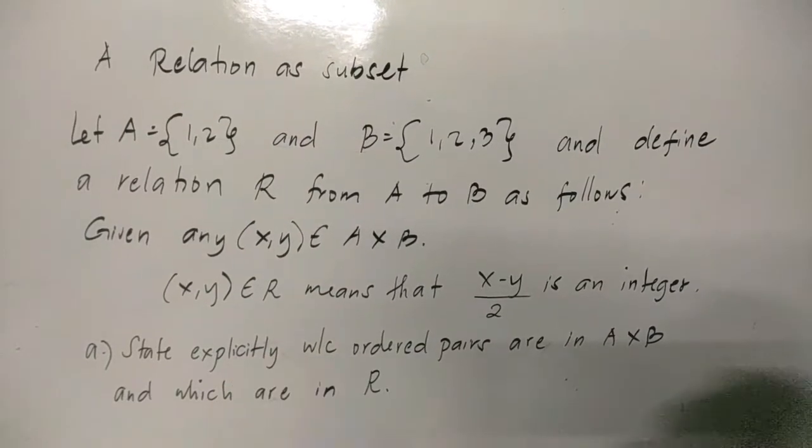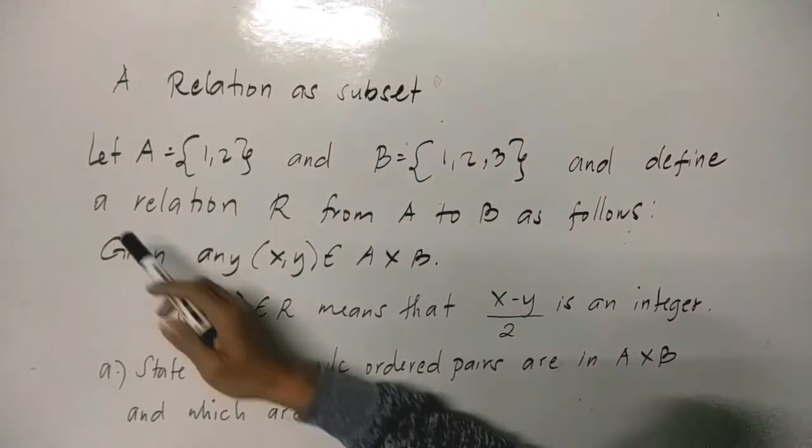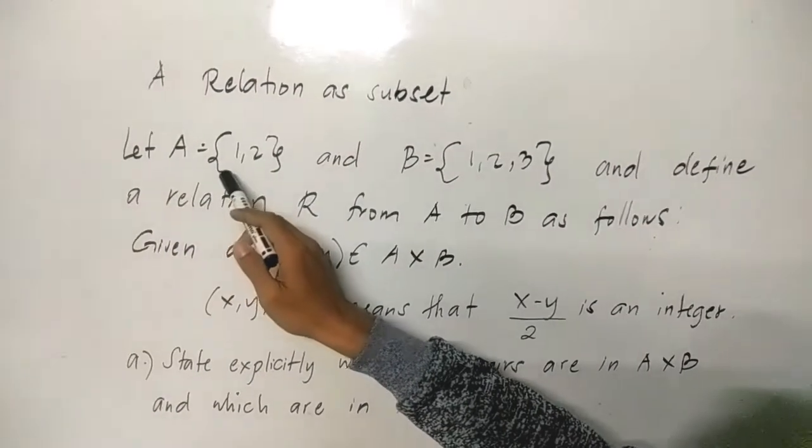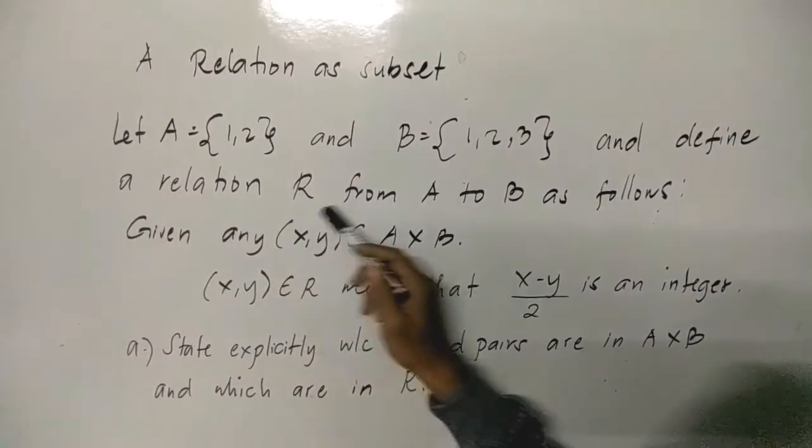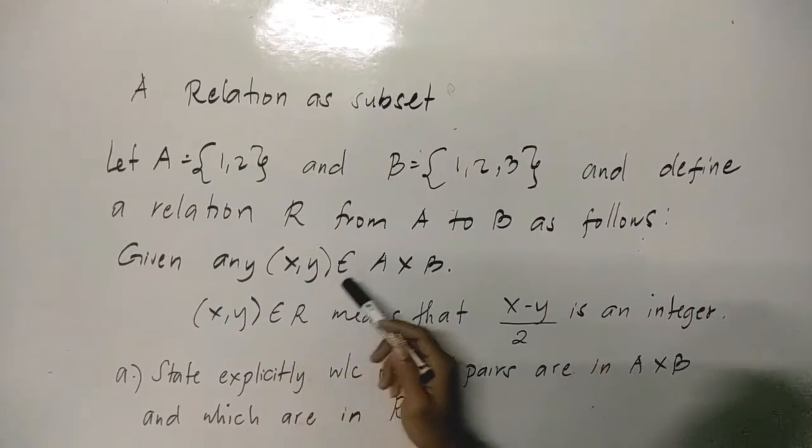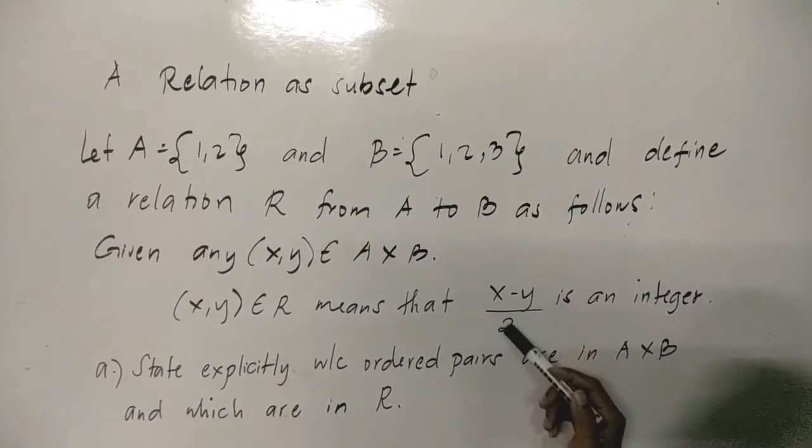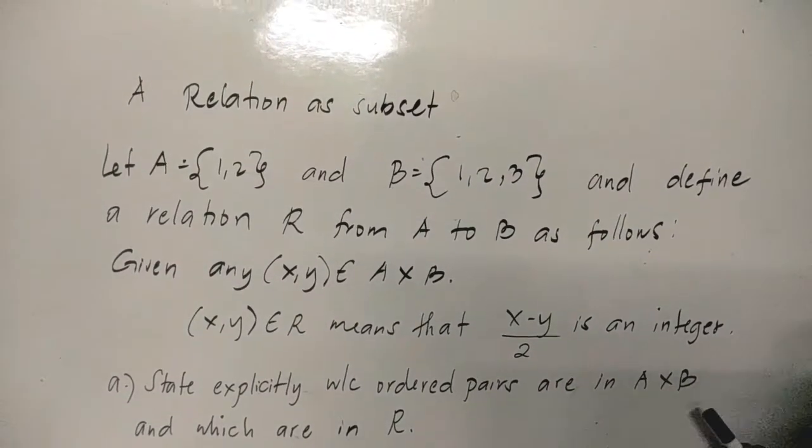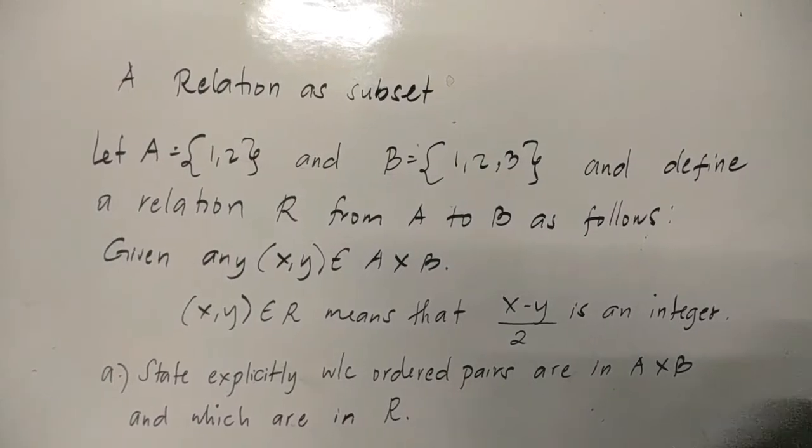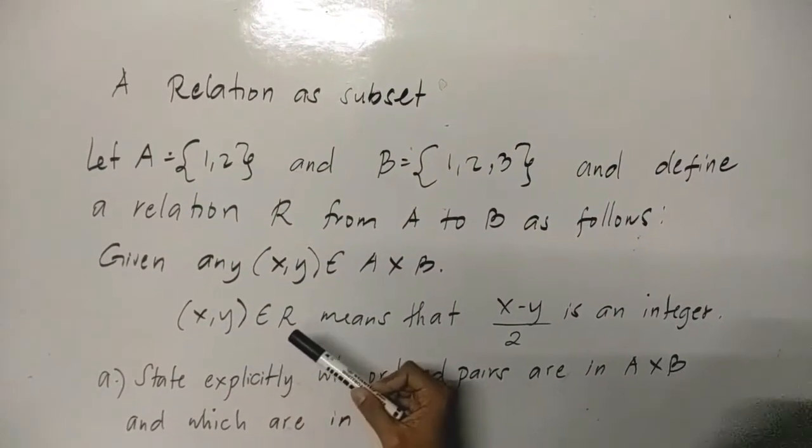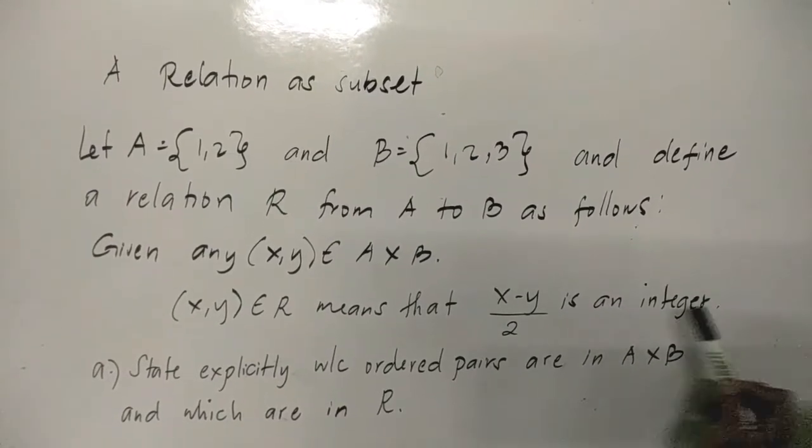This is mystery 143. For this video we are going to have the relation as a subset. Let A = {1, 2} and B = {1, 2, 3}, and define a relation R from A to B as follows: Given any (x, y) is an element of A × B, (x, y) is an element of R means that (x - y)/2 is an integer. So to determine if x, y - the ordered pairs - are related to each other, we check if (x - y)/2 is an integer through this example, through this set of elements.